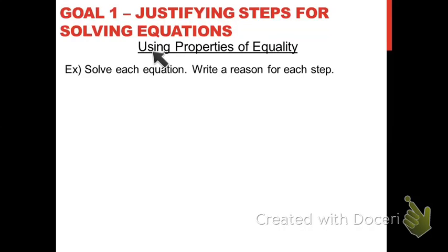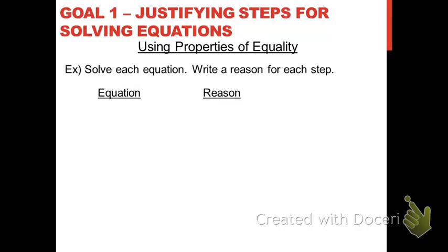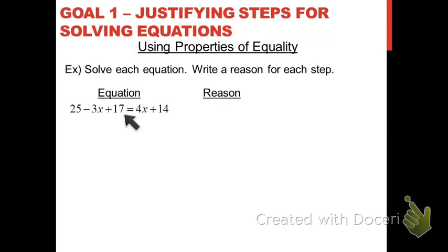Now let's get into actually using those properties of equality. The directions for the examples we're going to do are to solve the equation and write a reason for each step. We're trying to get you prepared for writing proofs about geometric figures, and those proofs are often written in two-column form. So the solutions of equations here will be written using two columns. In the left-hand column we'll have statements we're claiming to be true, and in the right-hand column we'll have the reasons to justify why each statement is true.